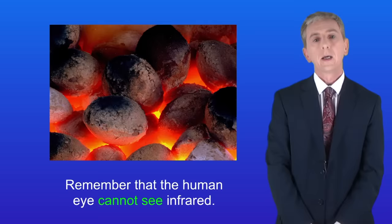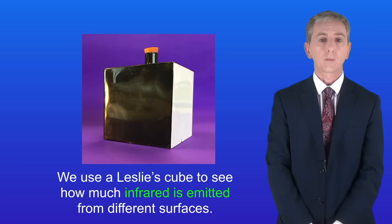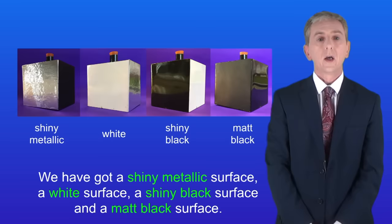Here is a Leslie's Cube, which we can use to see how much infrared is emitted from different surfaces. A Leslie's Cube has four different surfaces: a shiny metallic surface, a white surface, a shiny black surface, and a matte black surface. The word matte means not shiny.